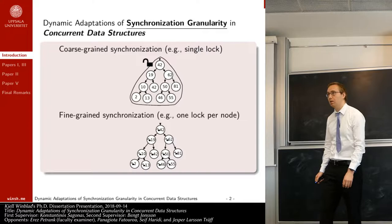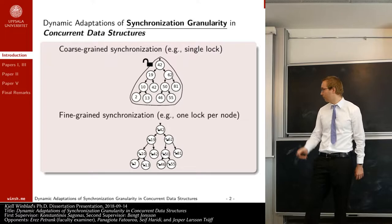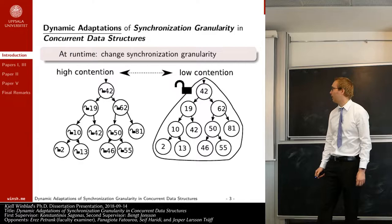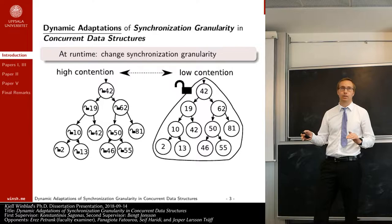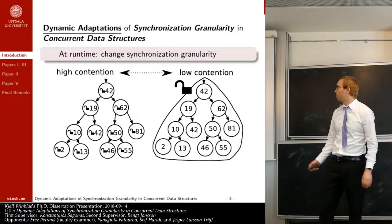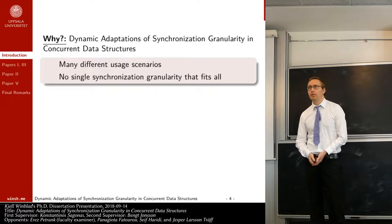This allows concurrent threads to work at the same time in different parts of the data structure. Now you have enough knowledge to understand the full title: Dynamics Adaptation of Synchronization Granularity in Concurrent Data Structures means that at runtime, you change the synchronization granularity of data structures — for example, based on how much contention is detected. The main data structures I propose do this in a very gradual way.